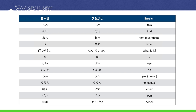We'll talk about that throughout the lesson. Here's your vocabulary. These first three are very important — we're going to use them a lot: これ、それ、あれ, which means 'this,' 'that,' and 'that over there.' The next word is our question word for 'what': 何. And then our phrase 'what is it': 何ですか？